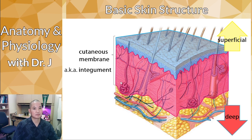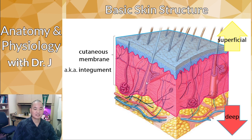Is your integumentary system just your skin? The skin is the largest part, but it also includes accessories such as hairs, nails, and glands — not just the skin itself, even though skin makes up the majority of the integumentary system.